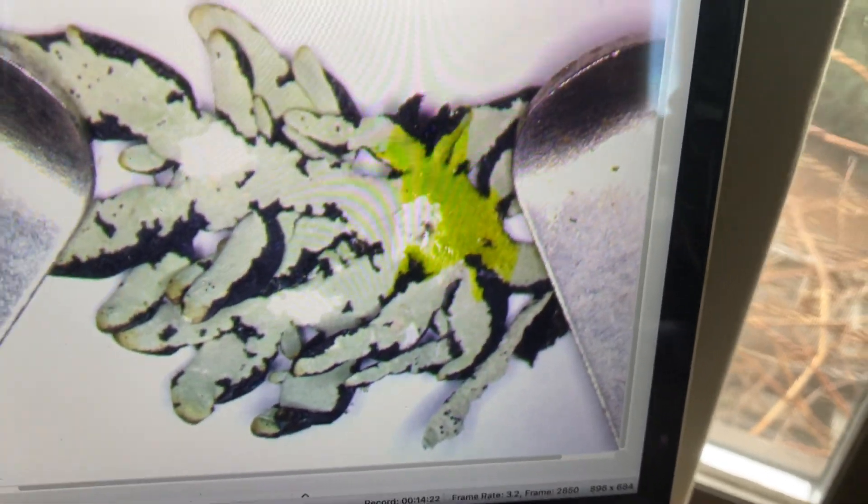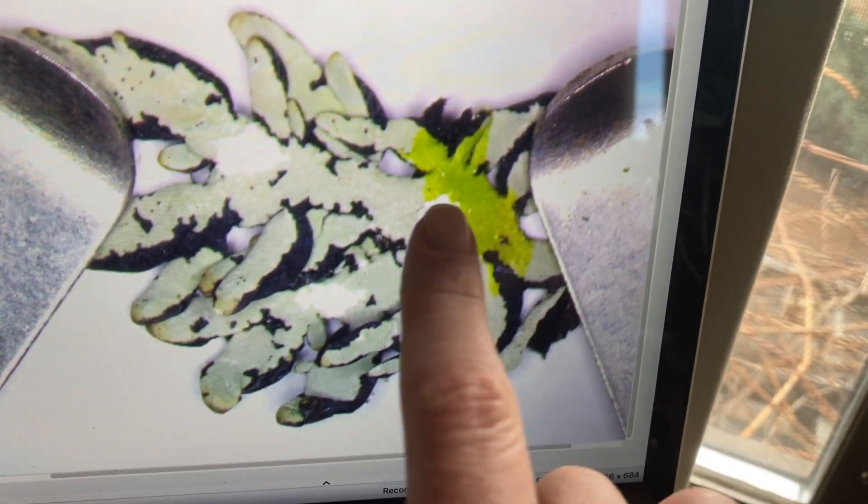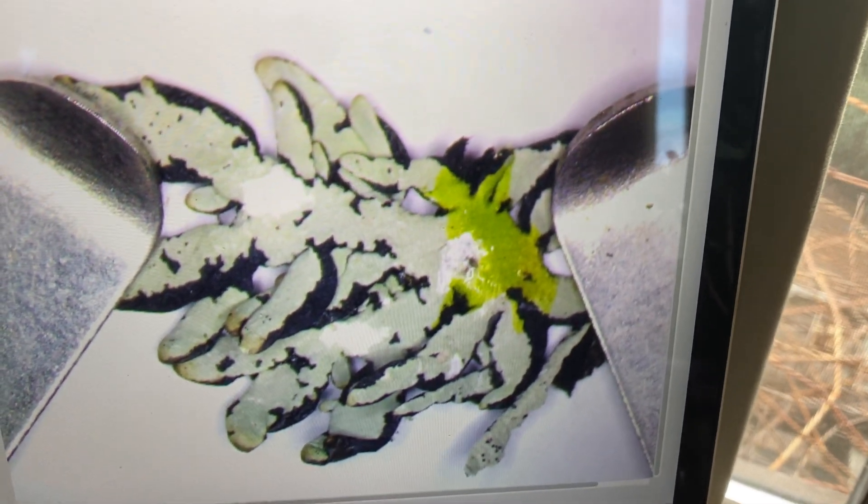And let's look up close. The cotton area is remaining white, even though I just dropped a little drop of K on there.